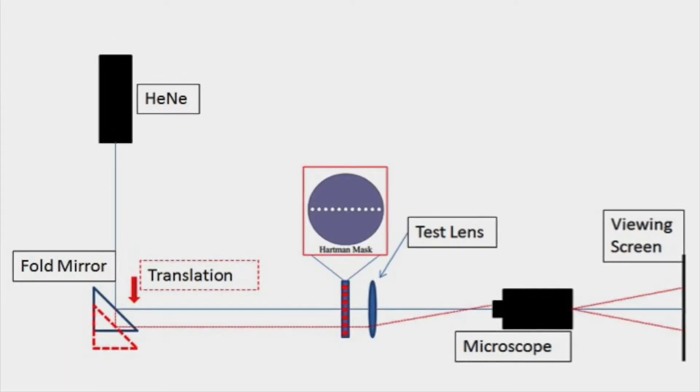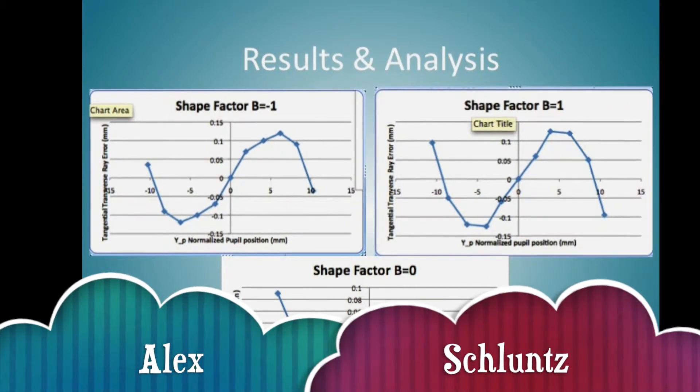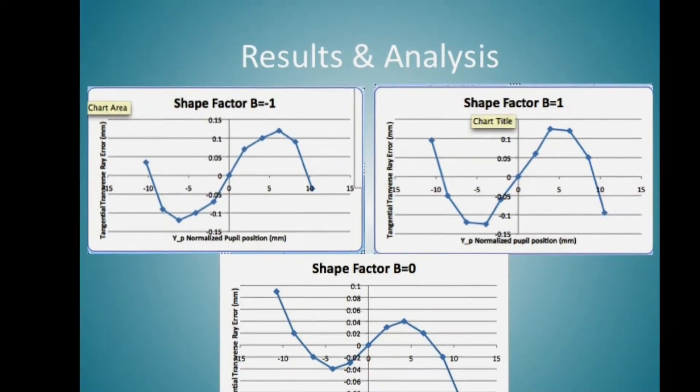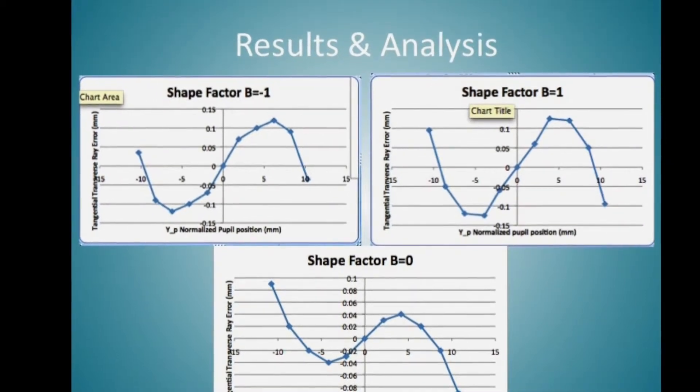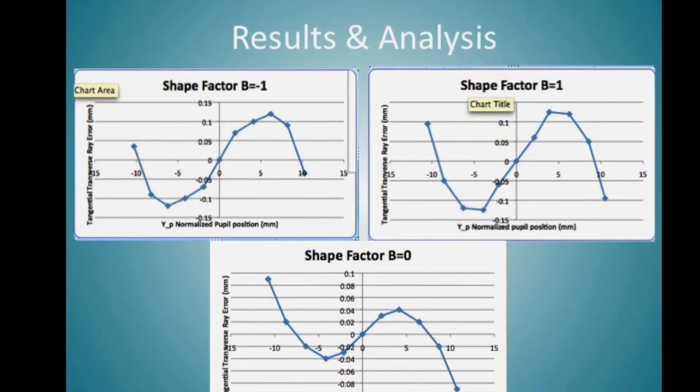Here we have the transverse ray error plots for the three different shape factors we tested. If we were exactly at marginal focus, the ray error at the edges of the pupil would be zero. Here we can see from the plots that we are further away from the lens than marginal focus is.